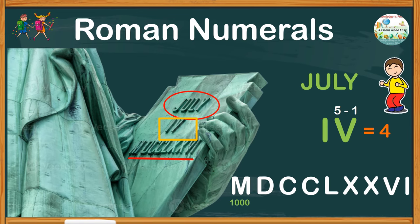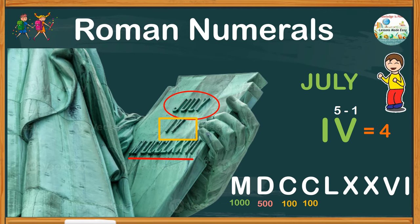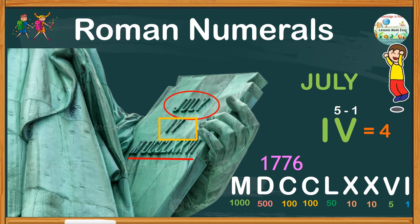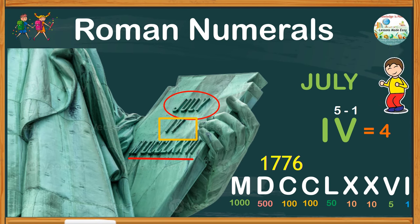M is for 1000, 500 for D, 100 for C, and we have two of them. L is 50, and 2 Xs for 10 each. V is 5, and I is 1. So, all together, we have 1,776. So, apparently, this is a date that says July 4, 1776, which marks the Declaration of American Independence from Great Britain.